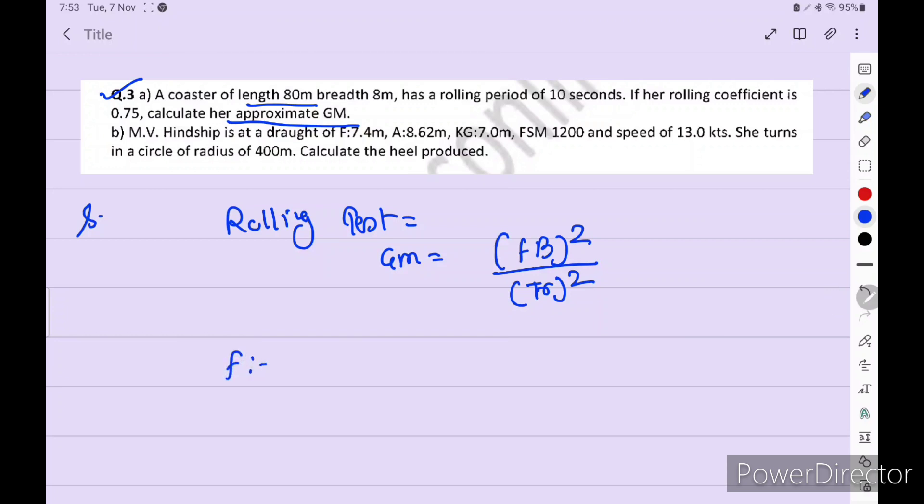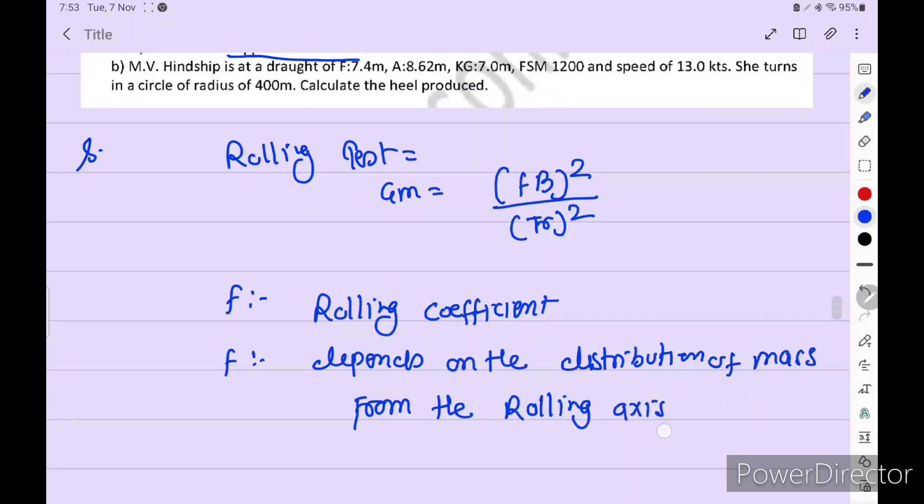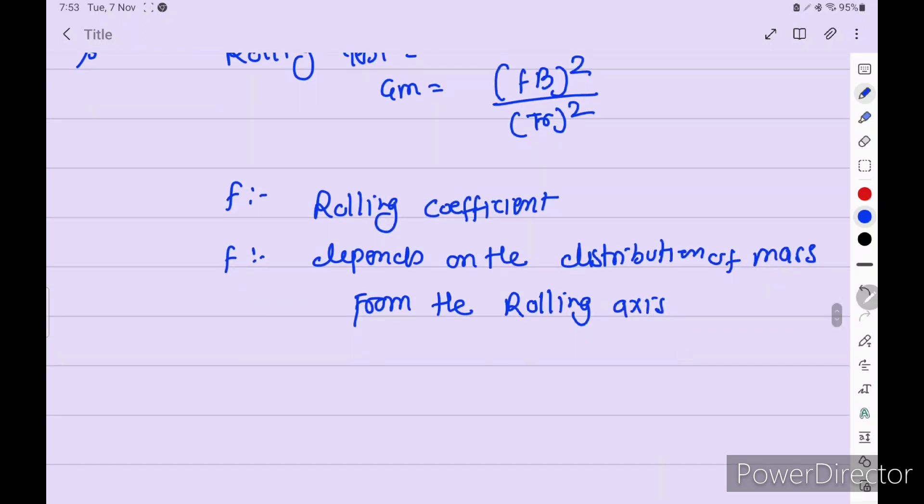Where F is rolling coefficient, and F depends on the distribution of weight from the rolling axis. B is molded breath of the vessel. TR is rolling period.